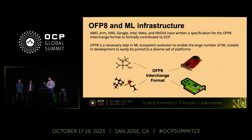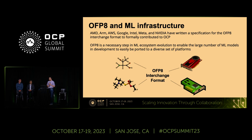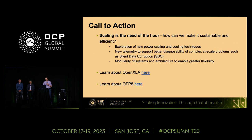Another example is the OpenFP8 interchange format. There are so many different pieces of hardware and stacks. If you needed every permutation to speak to each other, it would be a very difficult, intractable problem. One way to enable interoperability is through this interchange format, where different floating point representations can actually speak to each other. Scaling is really the need of the hour — we can do so much more, but it becomes increasingly expensive, increasingly power-hungry, and increasingly inefficient.